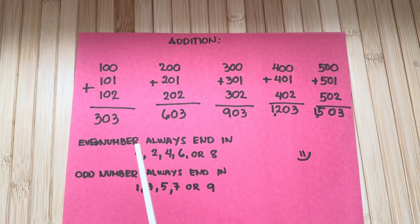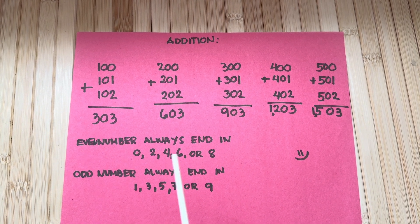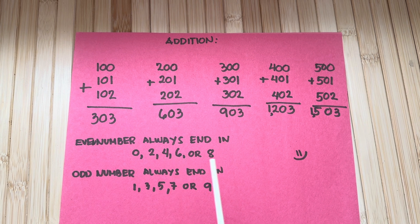Even numbers always end in 0, 2, 4, 6, or 8.